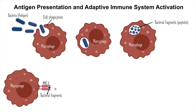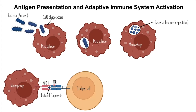How is the adaptive immune system activated? After the antigen-presenting cell, which is a macrophage in this case, presents the antigen on its surface, the T-helper cell will see it through its T-cell receptor. At this moment, the macrophage will secrete a cytokine called interleukin-1.